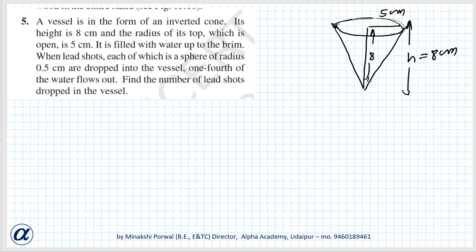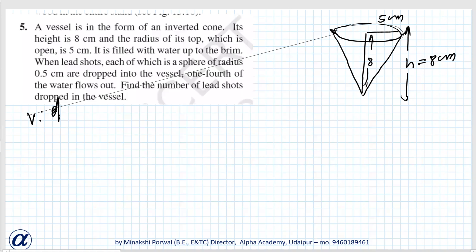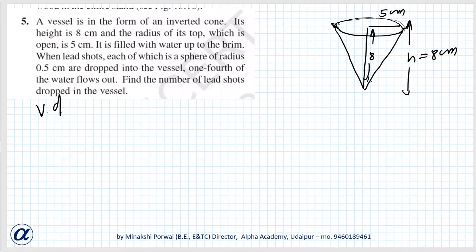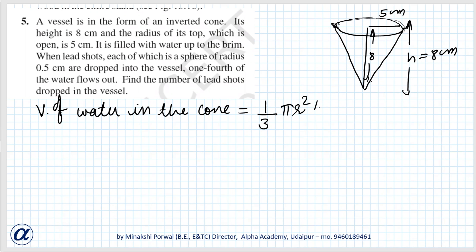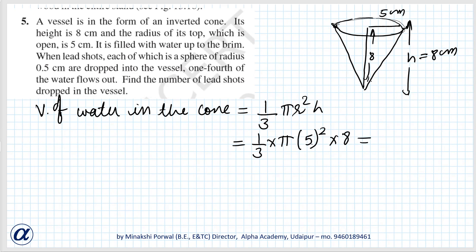First, we'll find the volume of cone, which equals the volume of water. The formula for volume of cone is one-third π r² h. That equals one-third π, and we'll keep it in terms of π only. So r² is five squared, which is 25; 25 into 8 is 200. So the volume of cone is 200π/3 cubic centimeters.